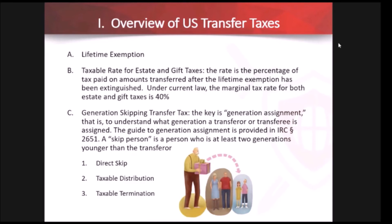As relates to U.S. transfer taxes, the most common thing individuals already know about is the lifetime exemption amount. In the United States, we have a unified transfer tax due credit. That means that regardless of when you make a transfer — in life it would be a gift, or at death either through probate or through a trust distribution — the transfer tax credit amount and the tax rate are the same.